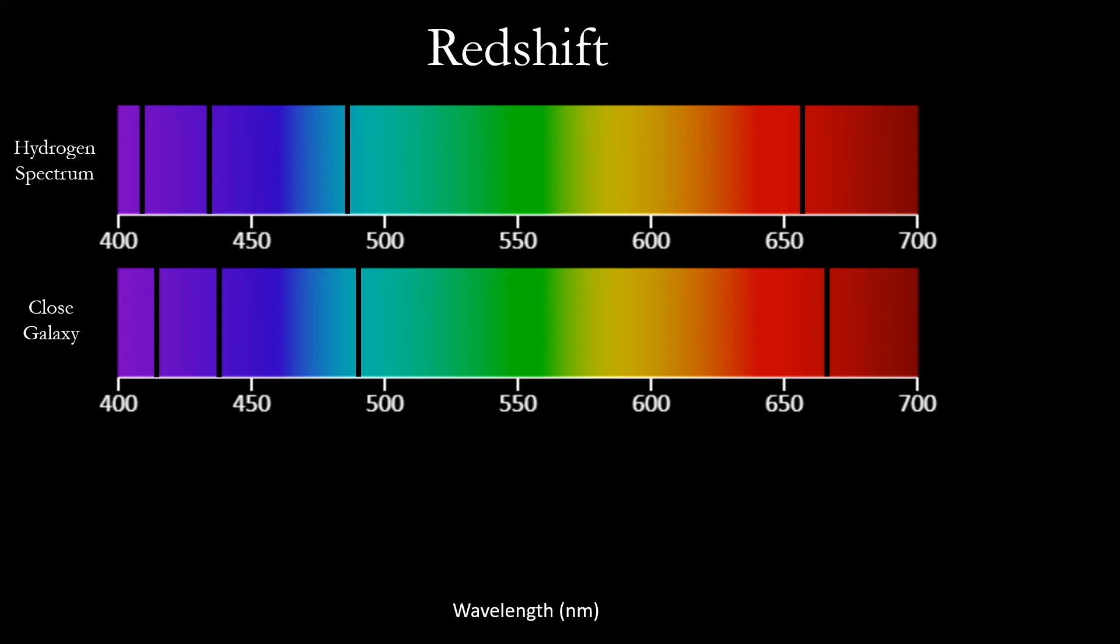Redshift describes a change in the wavelength of light towards longer wavelengths when the source of the light is moving away from us. The greater the velocity of the source, the greater the redshift.